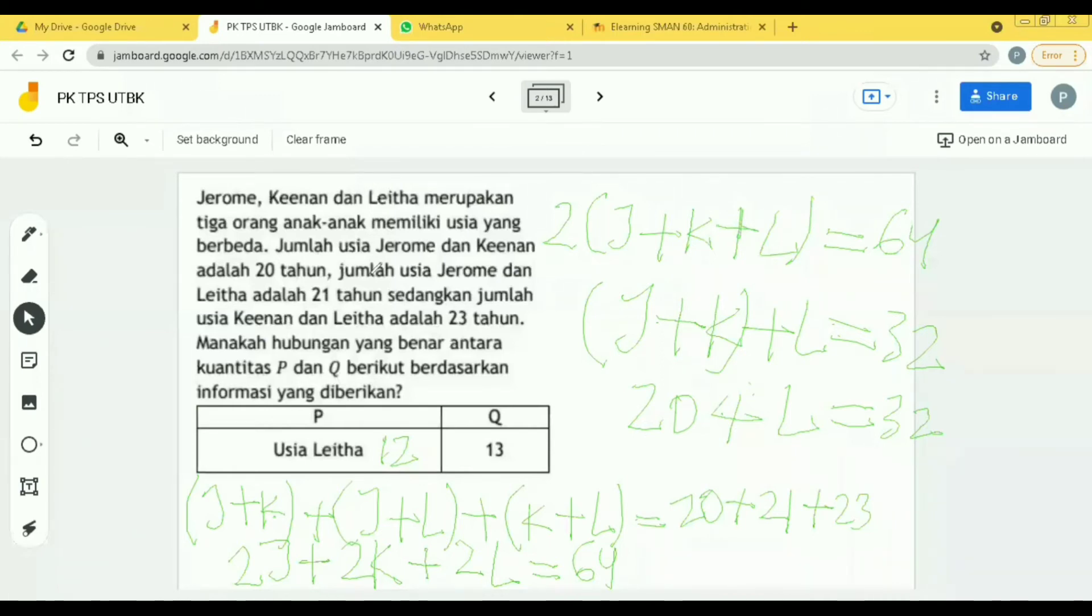Saya tadi agak bengong. Sampai tahapan ini, yang ini J plus K, yang ini J plus K, kan tadi 20. 20 plus L sama dengan 32, berarti L-nya kan 12. Oke, gimana, udah cukup jelas? Atau masih ada tahapan yang bingung? Saya mau nanya dong Pak. Silahkan.